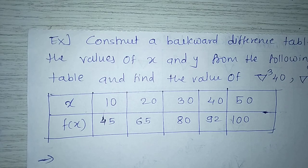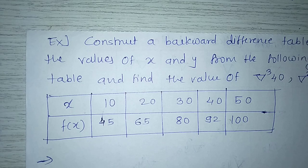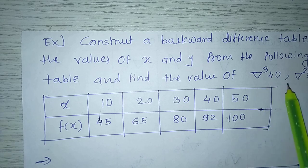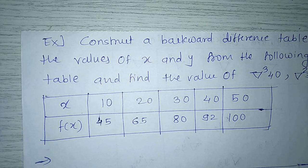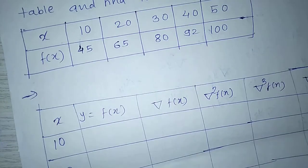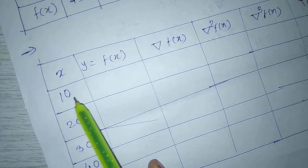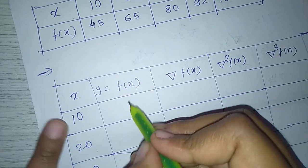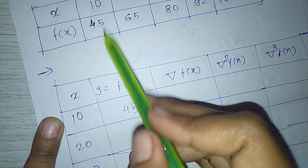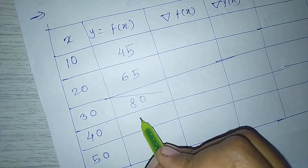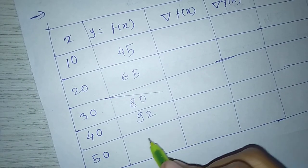Example: construct a backward difference table from the following values and find ∇³(40), ∇²(30), ∇⁴(50). The given values are x: 10, 20, 30, 40, 50 and f(x): f(10) = 45, f(20) = 65, f(30) = 80, f(40) = 92, f(50) = 100.